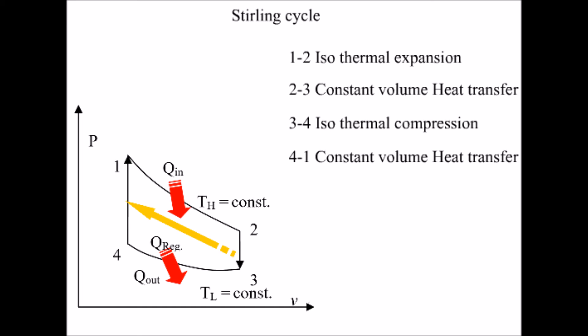From three to four, heat transfers isothermally from the gas to external heat sink at TL, so the gas temperature remains at TL while the pressure rises. From four to one, there will be an internal heat transfer from regenerator to working fluid and rises temperature to TH.